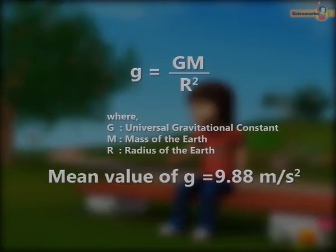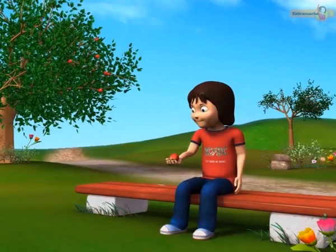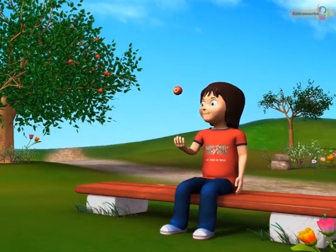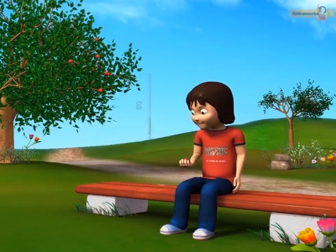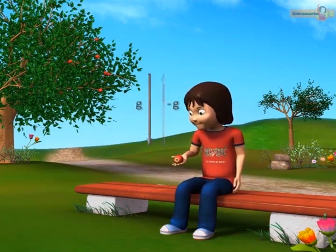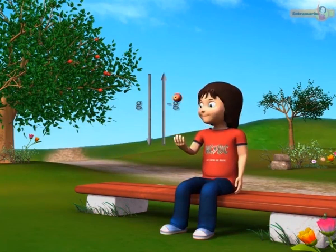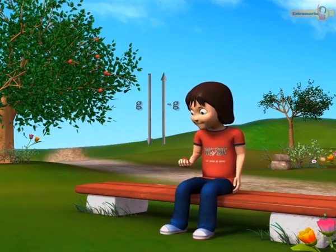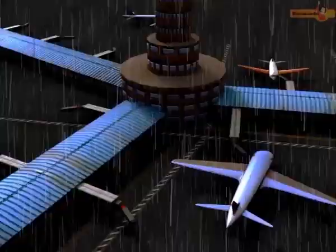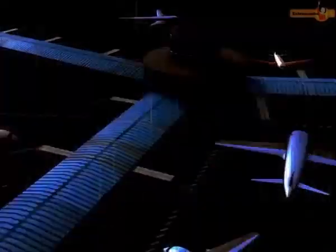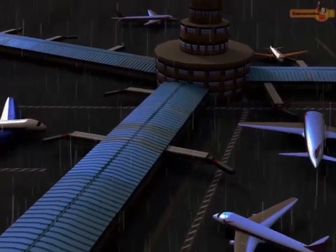It is denoted by G. Its mean value on the earth's surface is 9.88 metre per second square. The value of G is taken to be positive when an object falls downward and negative when it moves upward against the earth's gravity. For this reason, rain falls in the downward direction.